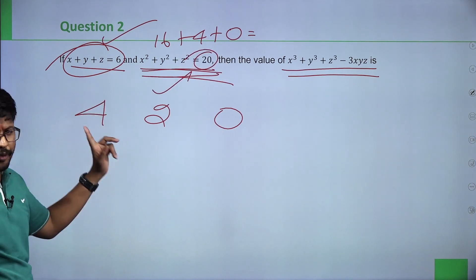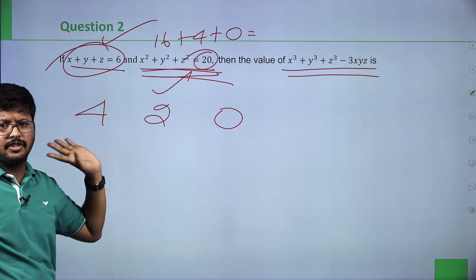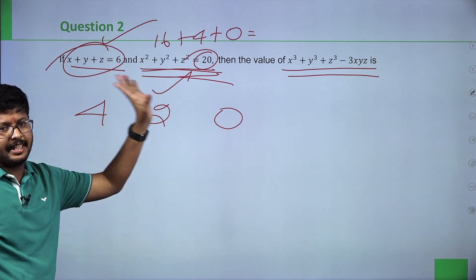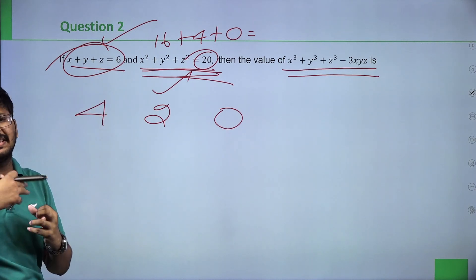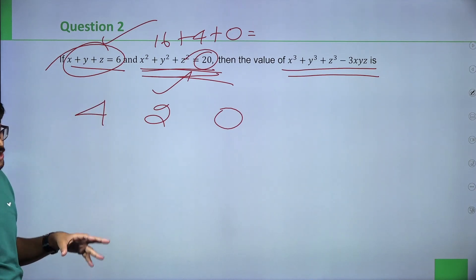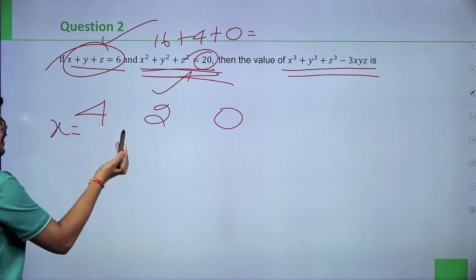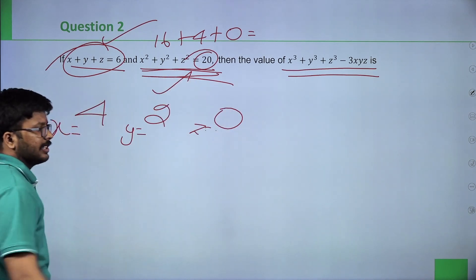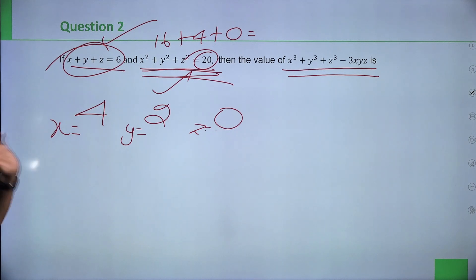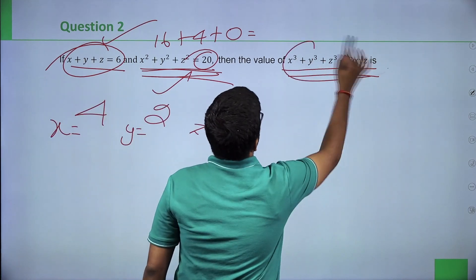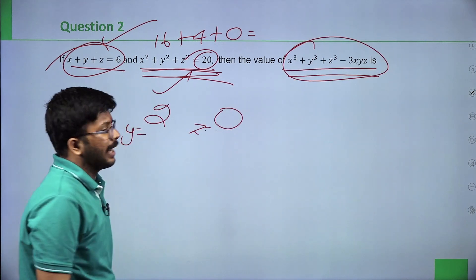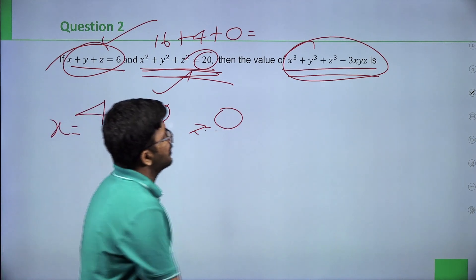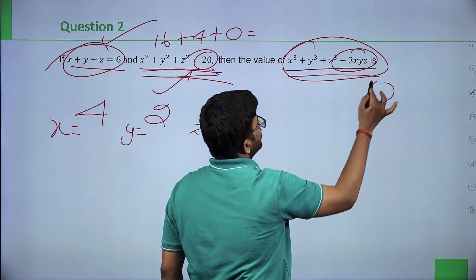So x equals 4, y equals 2, z equals 0 (or any permutation — it won't make any issue). Now find x cube plus y cube plus z cube minus 3xyz. For 3xyz: 4 into 2 into 0 — since one factor is 0, 3xyz equals 0.